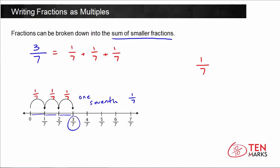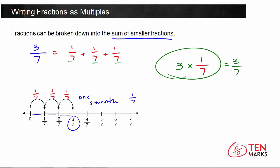Because 3 sevenths has 1, 2, 3 of these 1 seventh parts, that means we're going to multiply the fraction 1 seventh by 3. So the expression 3 times the fraction 1 seventh is equal to 3 sevenths. Notice we can write it as the sum of smaller fractions or we can write it as a multiple. Now let's practice doing this again with some other fractions.